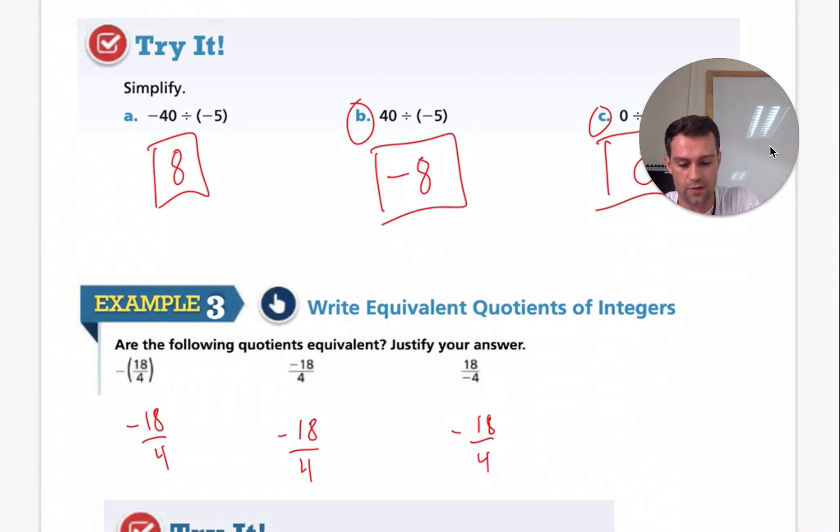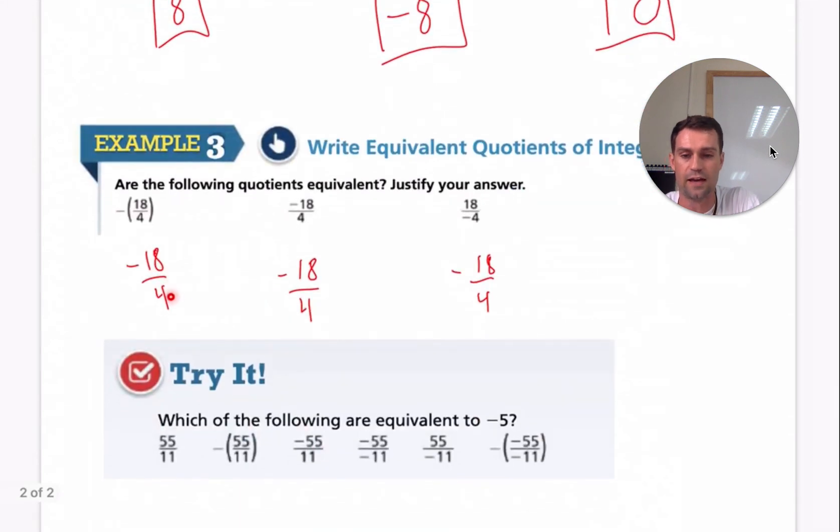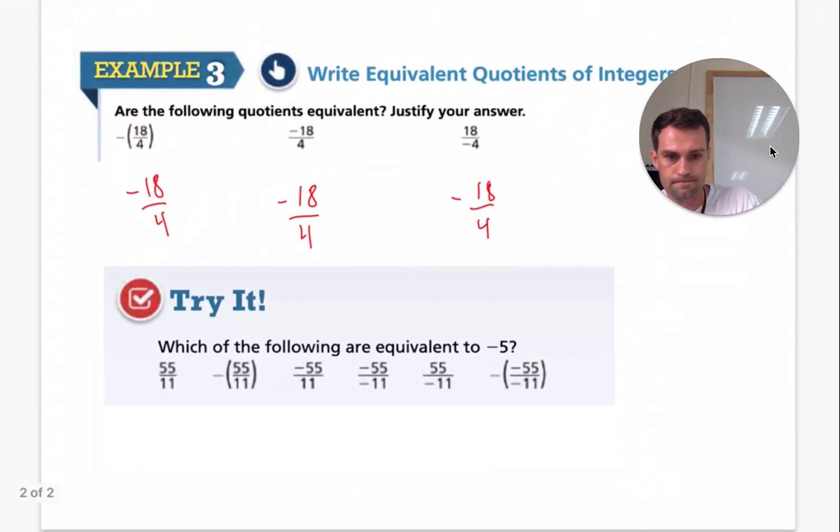There's just one negative. If you took a calculator and you took negative 18 divided by four, you would get the same thing. They would all be the same.